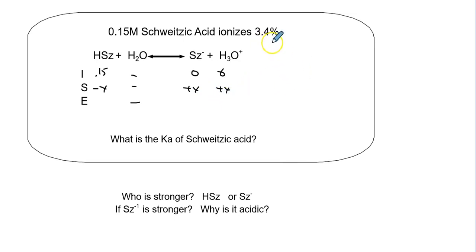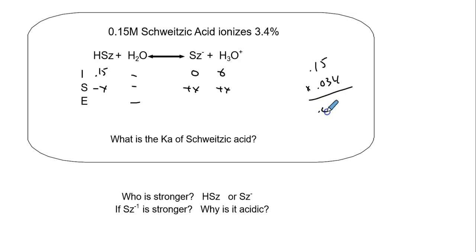X is 3.4% of 0.15, so X equals 0.15 times 0.034. Calculating: 0.15 times 0.034 equals 0.0051 moles per liter. So X equals 0.0051.